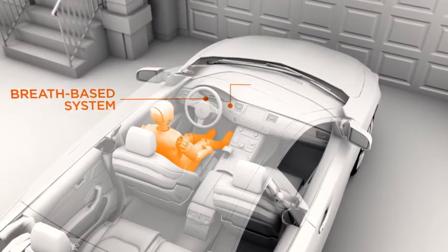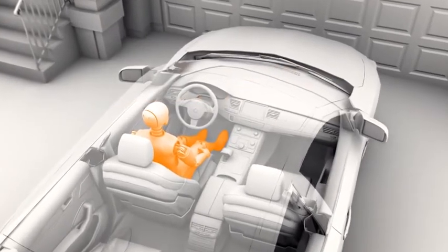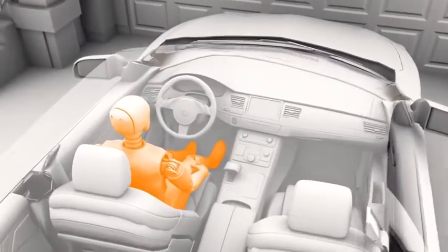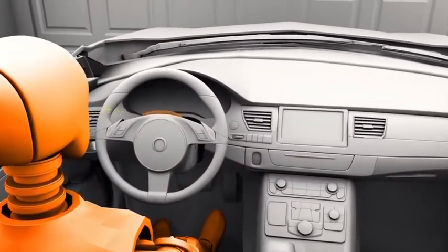a breath-based system and a touch-based system. The breath-based technology pulls the driver's exhaled breath into a sensor, which could be located in the driver's side door or in the steering column, as the driver breathes normally.